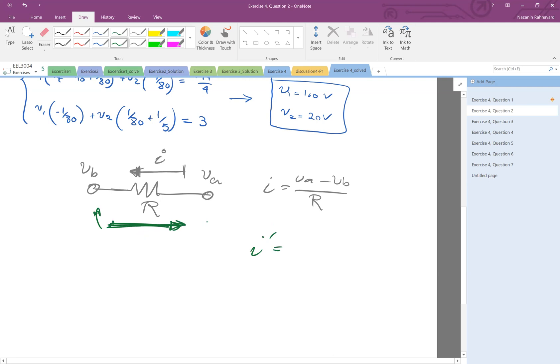I prime is the beginning of the arrow, Vb minus Va divided by R. So it really depends on the direction of the current they are asking us.